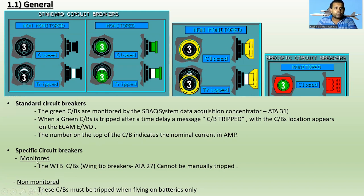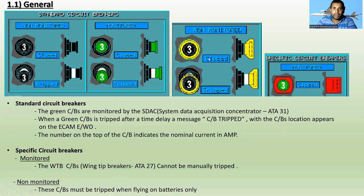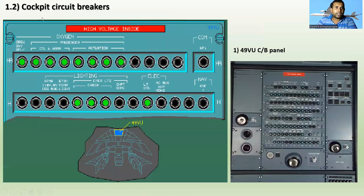For specific circuit breakers, there are two types: monitored and non-monitored. The monitored one is the wingtip brake circuit breaker, which belongs to ATA Chapter 27 and cannot be manually tripped. The non-monitored circuit breakers must be tripped when flying on batteries only — remember this.